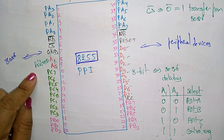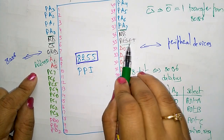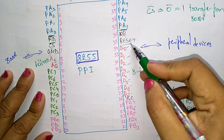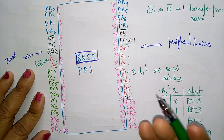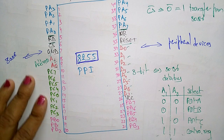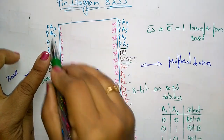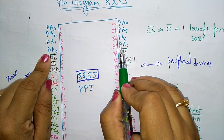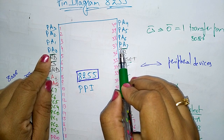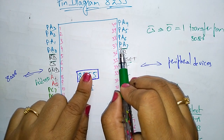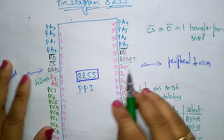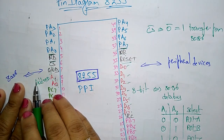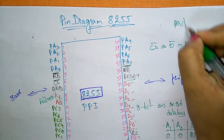RESET is used to reset the device — it clears the control register whenever the reset signal is active. Port A (PA0 to PA7) consists of 8-bit bidirectional input/output pins used to send data to peripherals or to receive data from peripherals.